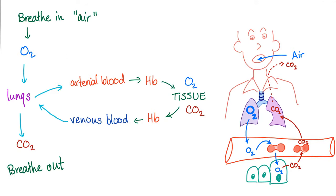Here is the whole story: you breathe the air in, air has oxygen, it goes to the lung, then the arterial blood jumps on the hemoglobin. Now oxygen is in the tissue, carbon dioxide is on the hemoglobin, carbon dioxide is in the venous blood, and the lungs breathe out this CO2.